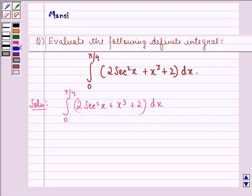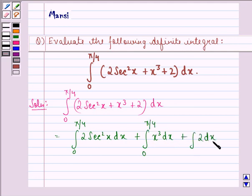Now, on separating these three integrands, we can write it as: integral 0 to pi by 4 of 2 secant square x dx, plus integral x cube dx with limits 0 to pi by 4, plus integral 2 dx with limits 0 to pi by 4.